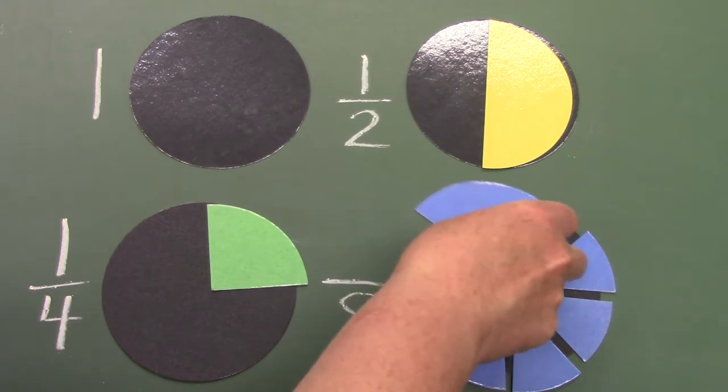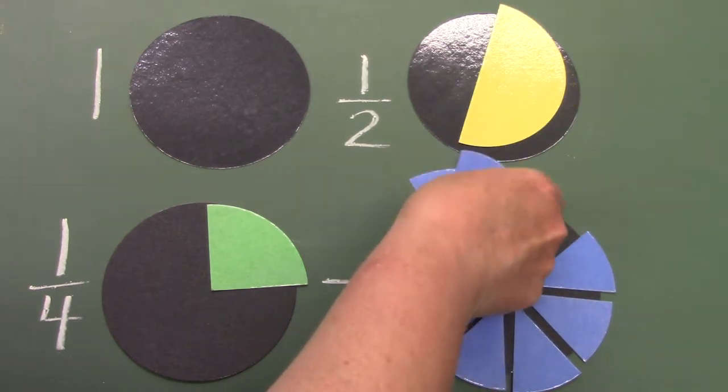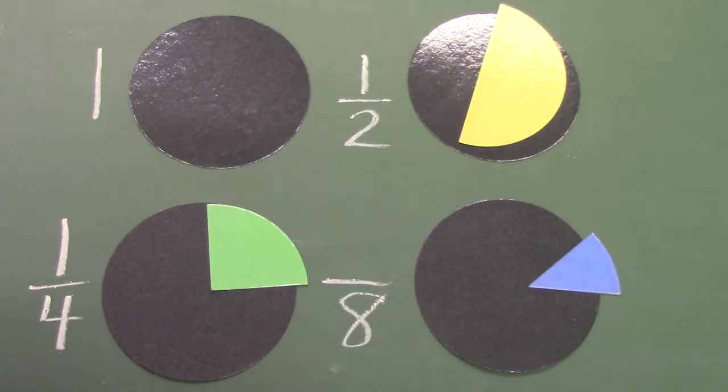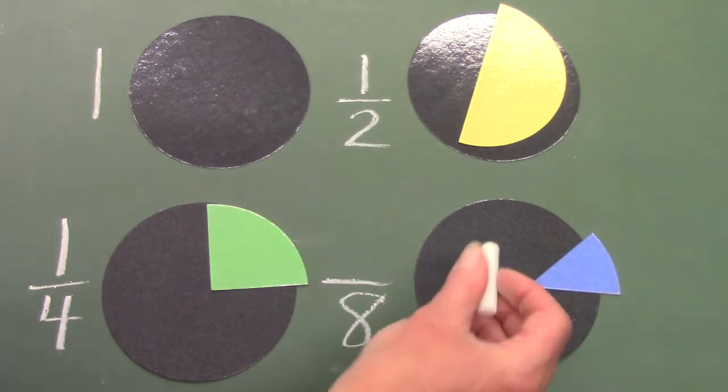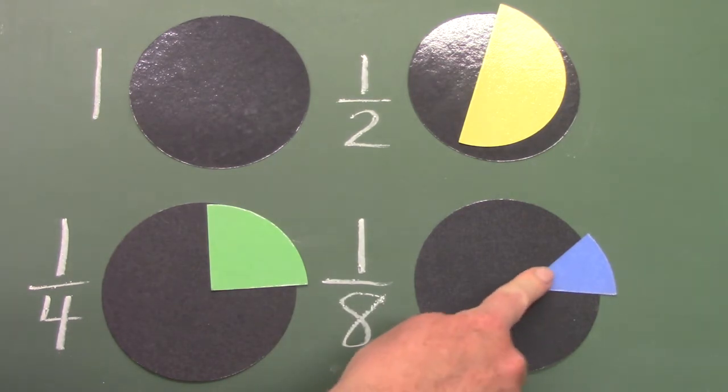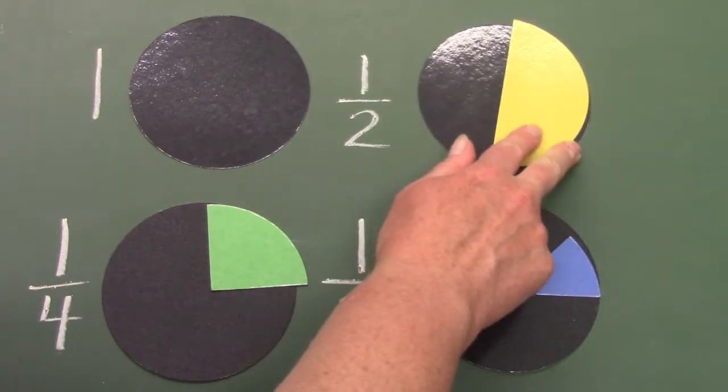If I take seven of these away, let's see if I can get all of them. If we take seven of them away, then we have one out of the eight pieces that we would need to make a circle.